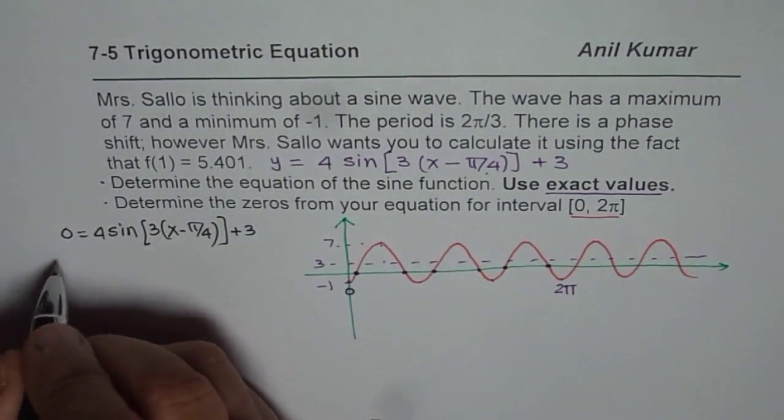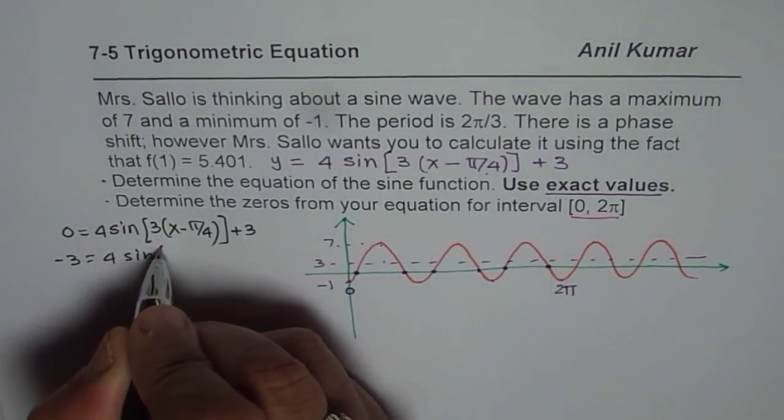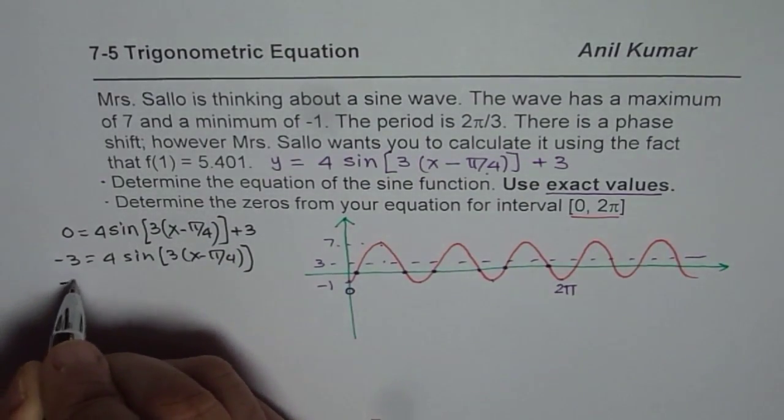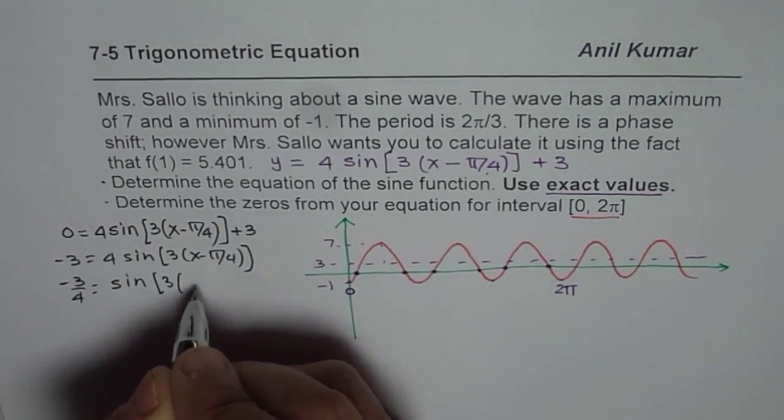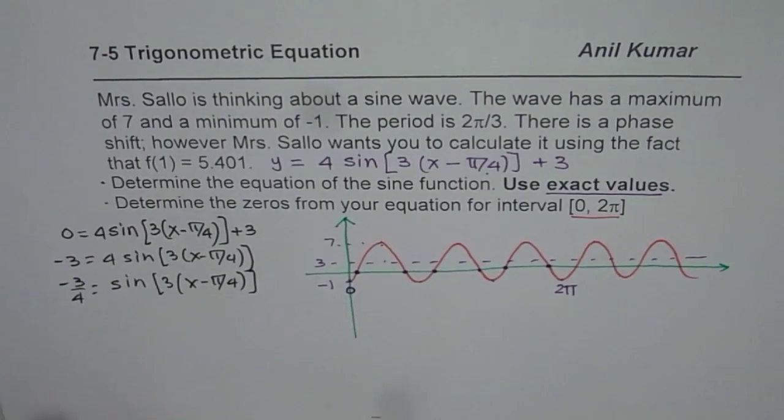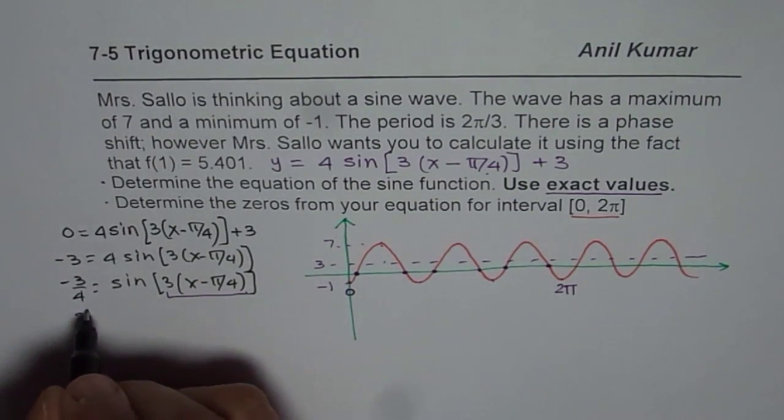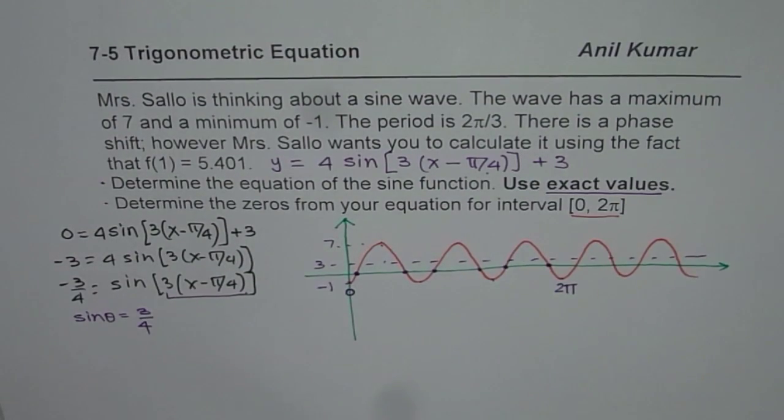Then we will divide by 4 to get -3/4 = sin[3(x - π/4)]. Now as we had been solving all the equations we will say, let's treat this angle as theta. Let us now say sine theta equals to 3/4. So let's find the related acute angle, that is basic.